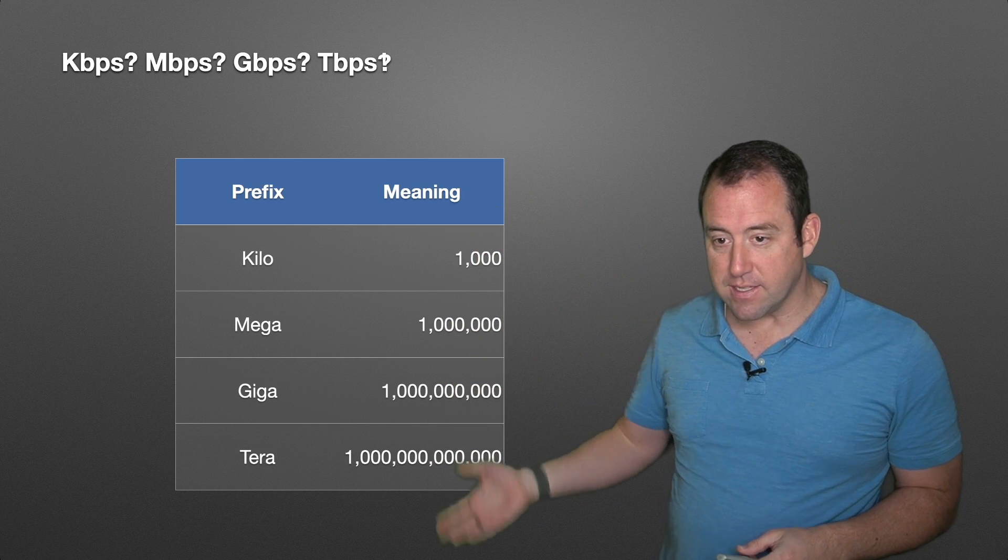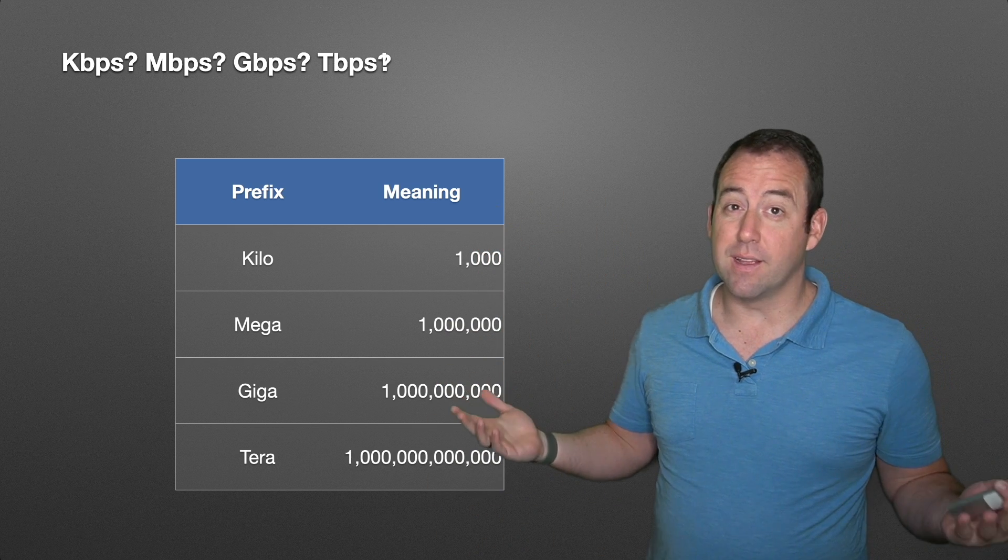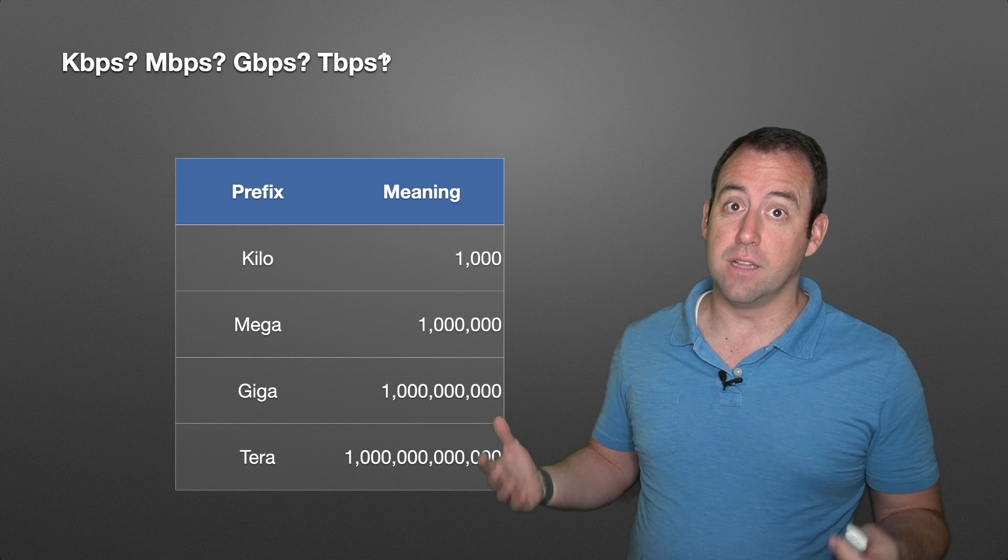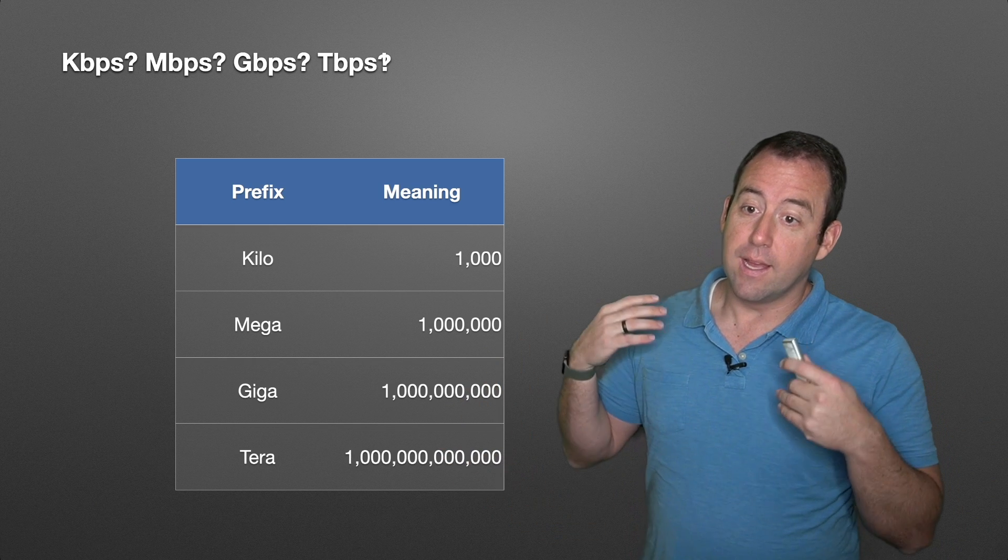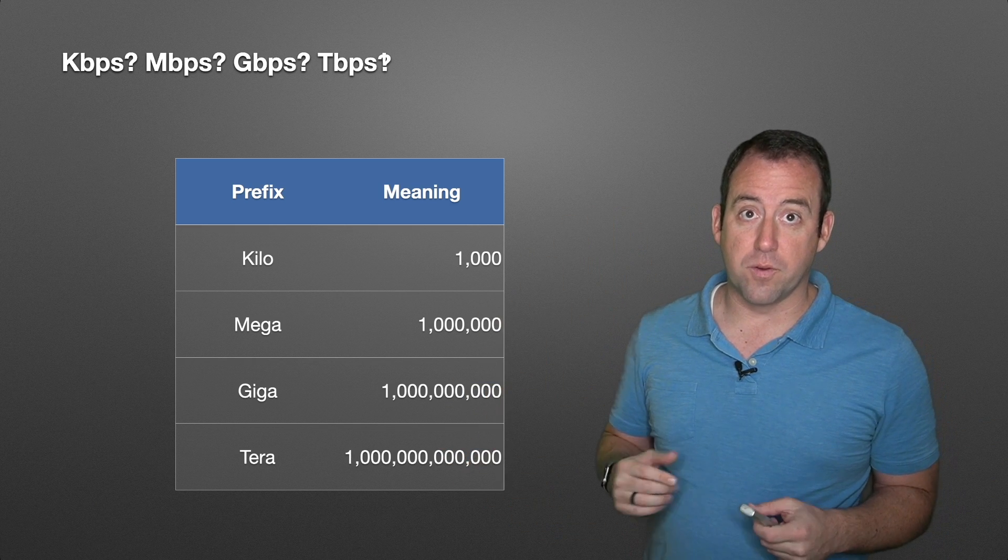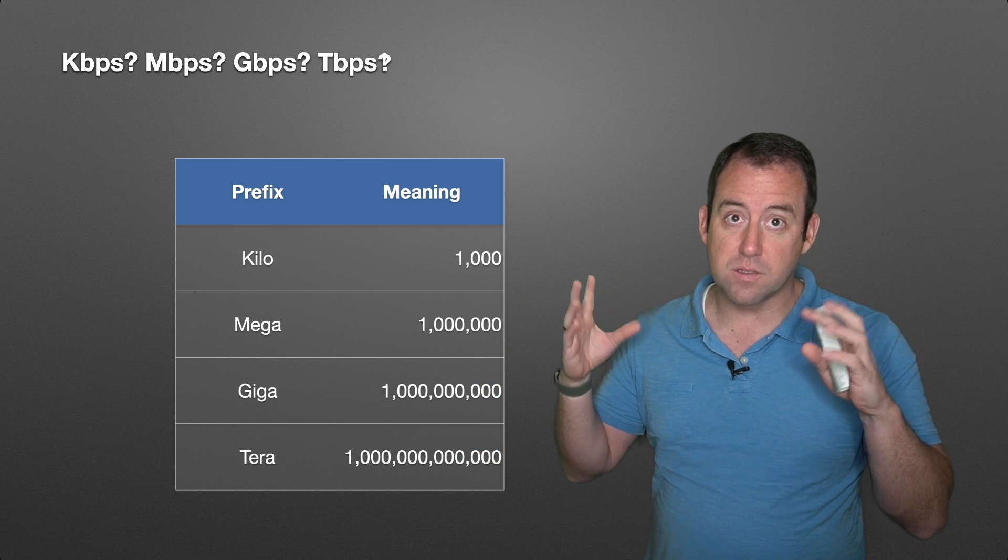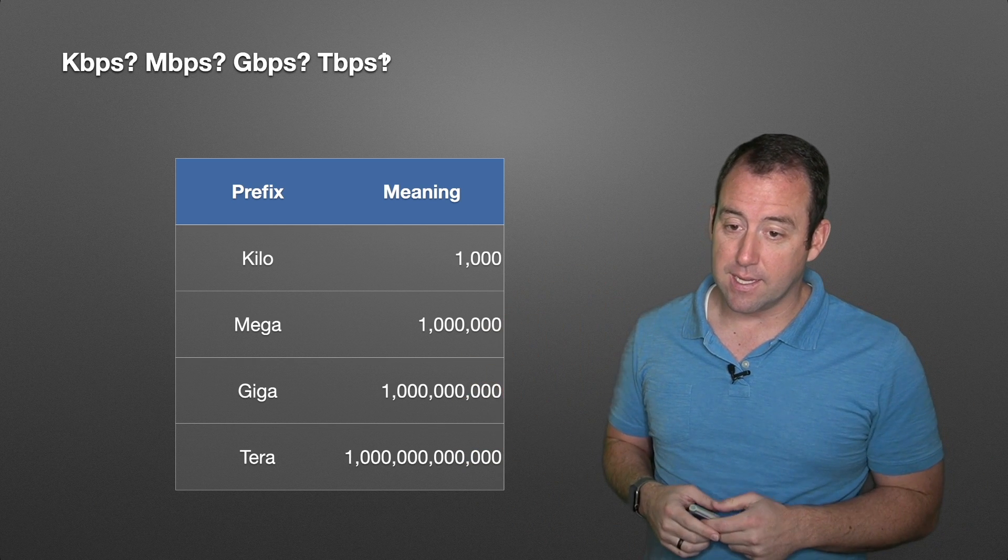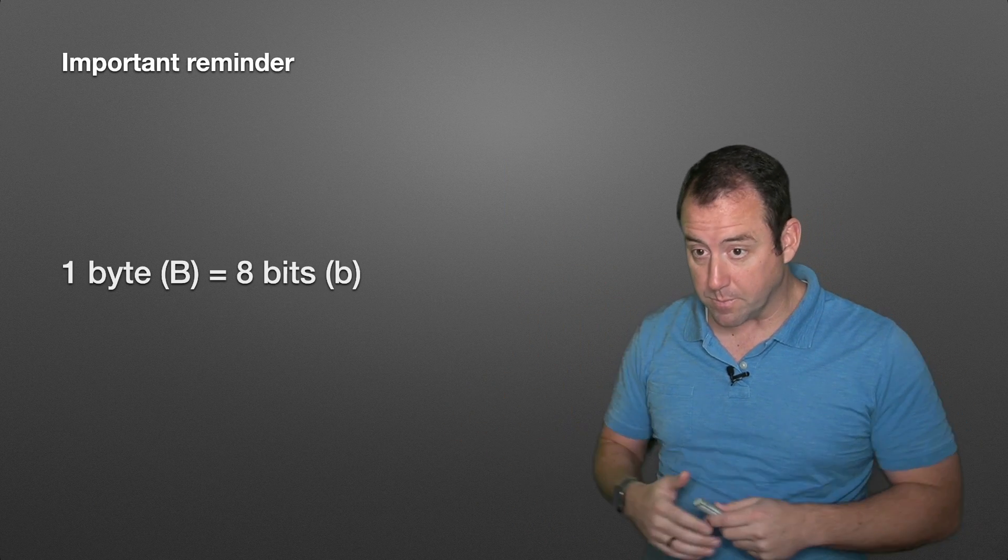So as we look at these increases in speed, we can see it's getting really fast. It's sending a lot of signals very, very quickly. And that is what those are referring to. It's the number of ones and zeros, the number of signals that can be sent in one second, bits per second.